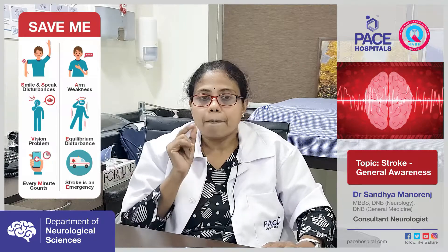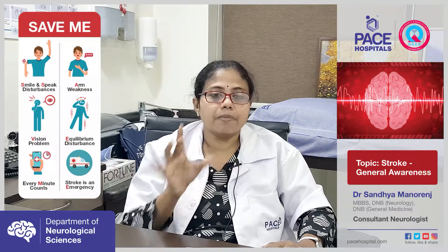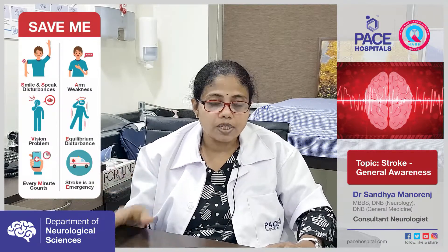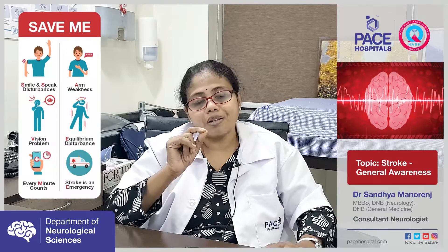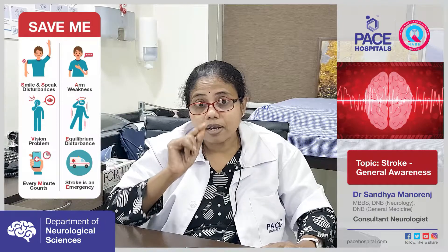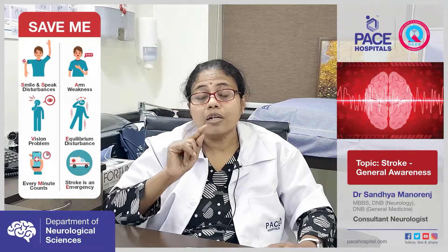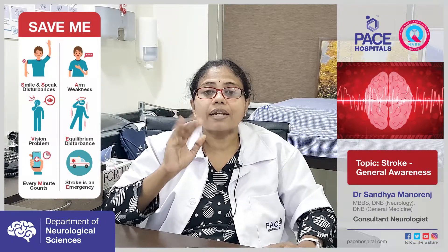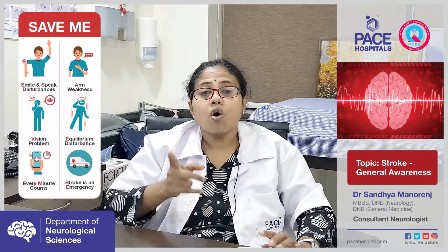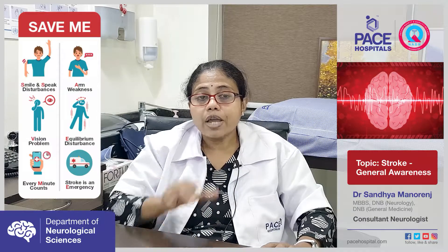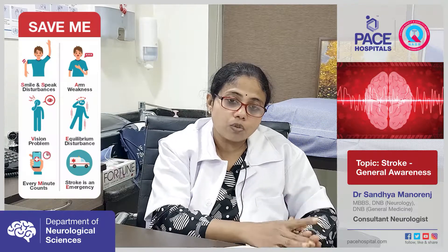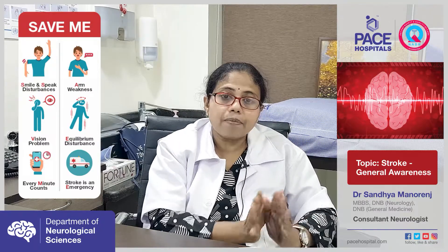ME stands for Minute Emergency. Every minute counts — for every one second of decreased blood supply to the brain, around 32,000 neuronal cells get damaged or die. In one minute, approximately 1.9 million brain cells die. So stroke should be recognized immediately at home and the patient rushed to the hospital without delay, after informing the emergency team to be ready with the CT scan.